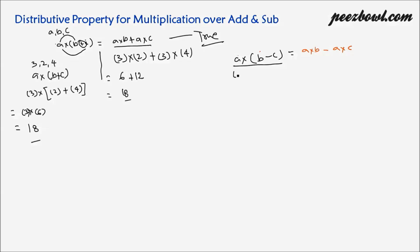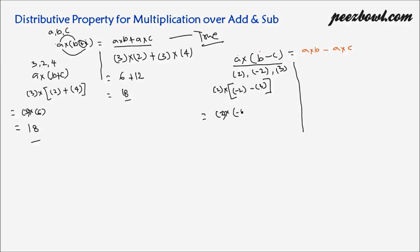Let us learn this by an example. Suppose we have three integers: 2, minus 2 and 3. We need to put these values on our left hand side: a, that is 2, multiplied by b minus c, which is minus 2 minus 3. This is equal to 2 multiplied by minus 5, which equals minus 10.